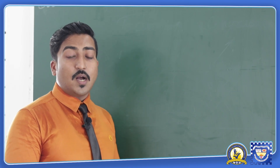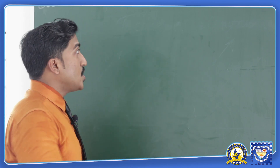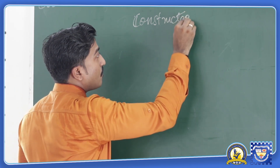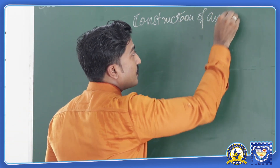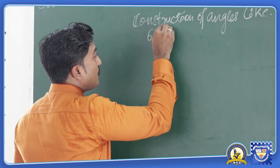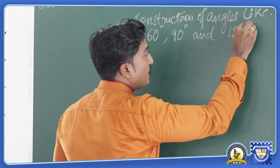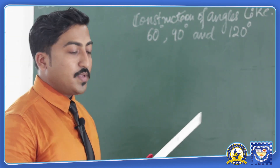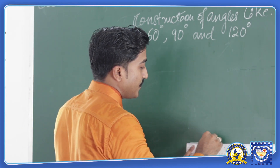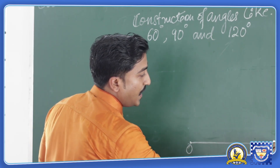Now we will learn about how to draw various angles like 60 degree, 90 degree, and 120 degree. Our topic is construction of angles of 60 degree, 90 degree, and 120 degree. For that we will start again with the basic rule — we will draw a particular line and name it as O and B.